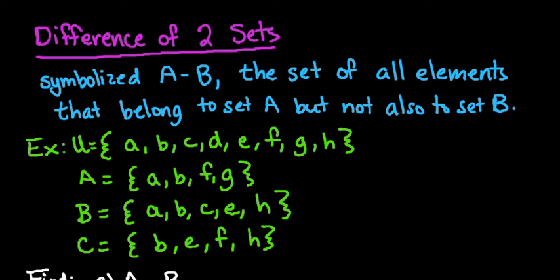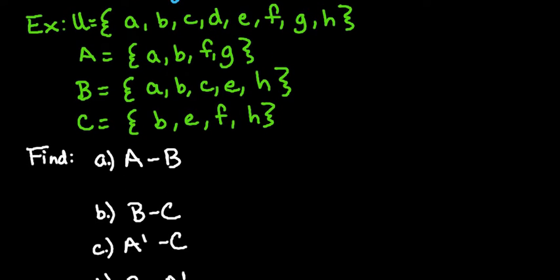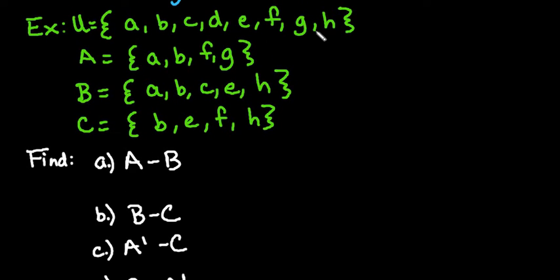So I have several examples here. What we have is a universal set with the letters A through H, so A, B, C, D, E, F, G, and H.